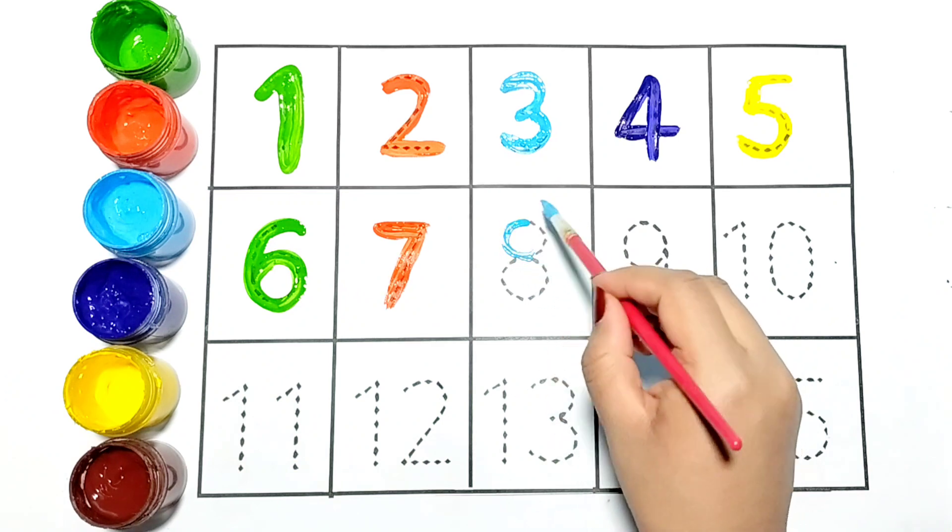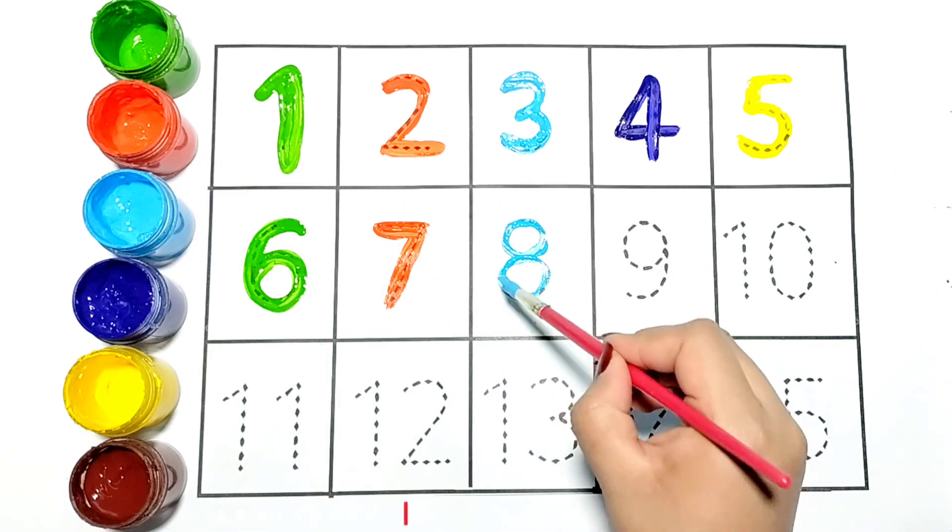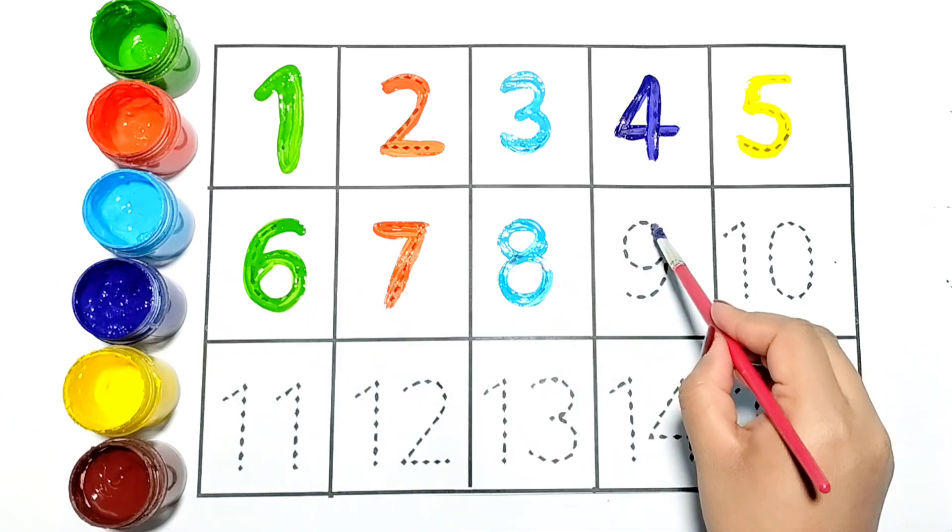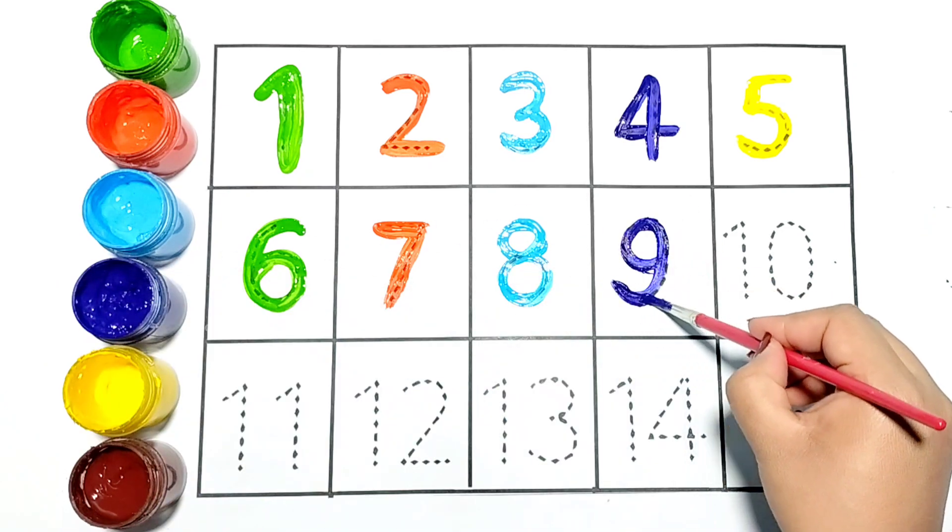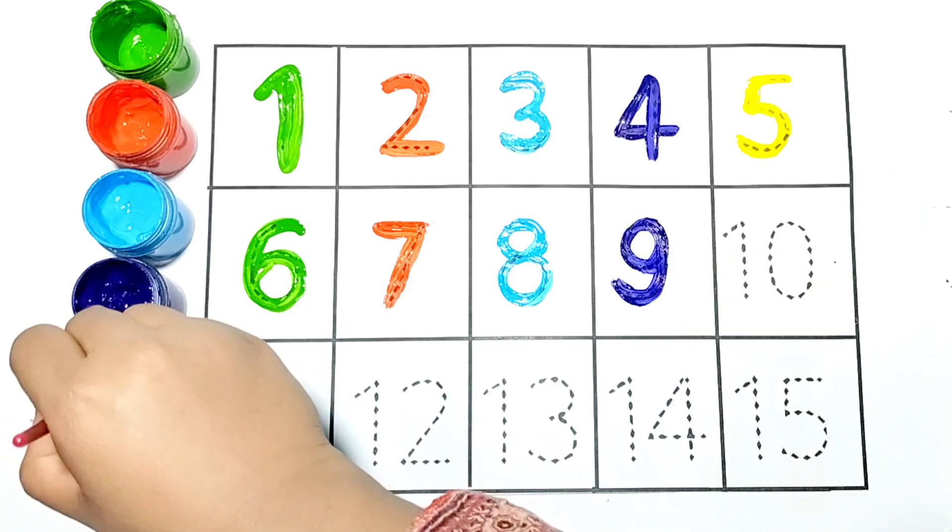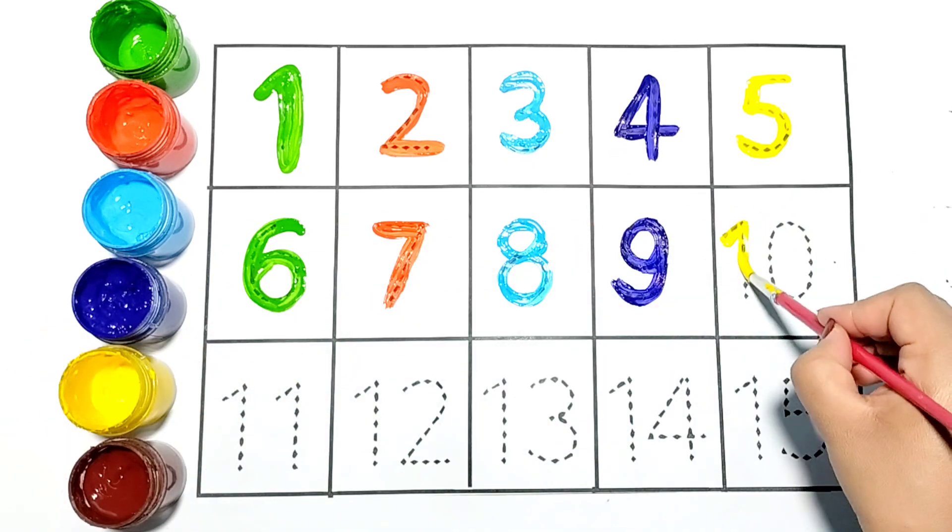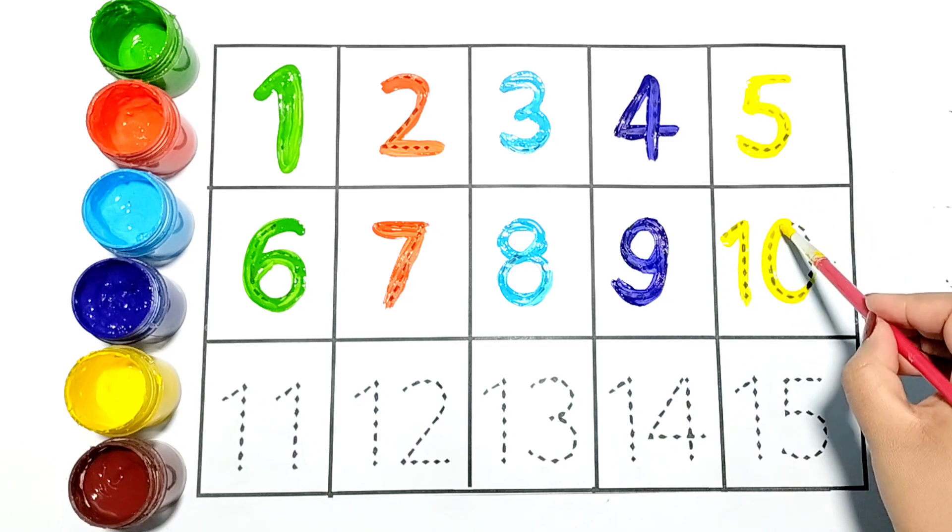Now I am writing 8. It is in blue color. Next number is 9. Kids, repeat with me. It is number 9. It is in purple color. Next number is 10. It is in yellow color.